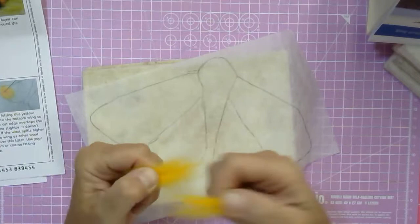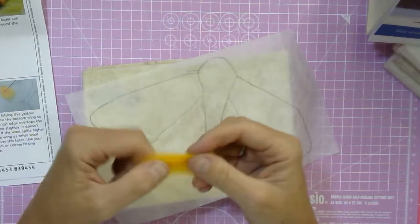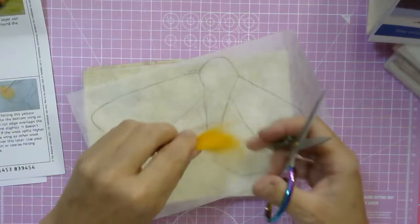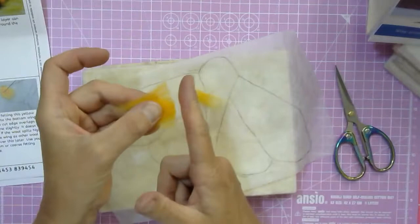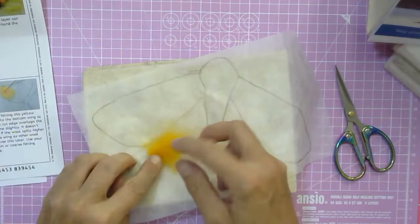Now we're going to cut one edge so that it's absolutely straight. The edge is here now straight, and that edge is going to be on the tip of the lower wing.